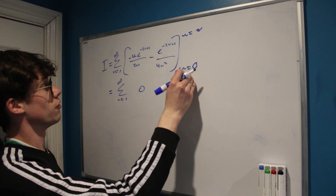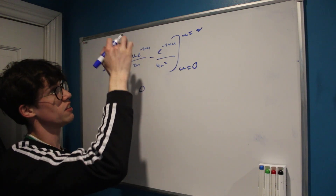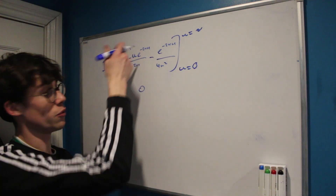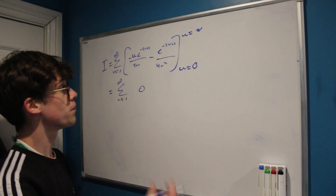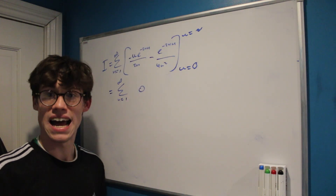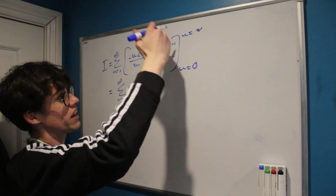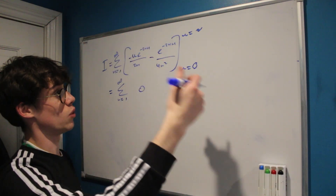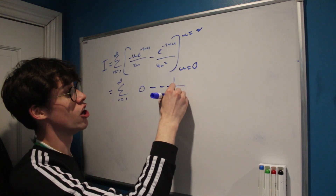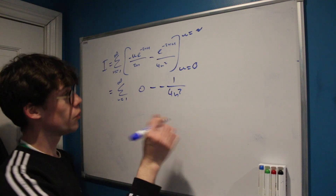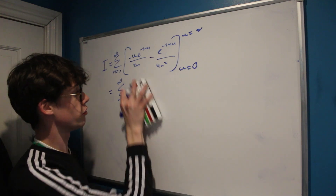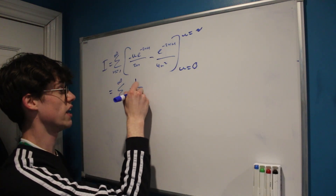At the lower bound u = 0, the first term −ue^(−2nu)/(2n) becomes 0 because it contains u. The second term −e^(−2nu)/(4n²) becomes −e^0/(4n²) = −1/(4n²). We subtract this lower bound, so we're subtracting −1/(4n²), which is the same as adding 1/(4n²). Therefore each integral evaluates to 1/(4n²).